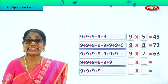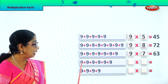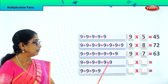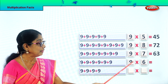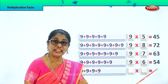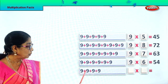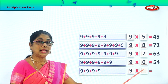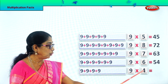Nine sevens are sixty-three. Nine — how many times? 1, 2, 3, 4, 5, 6. Nine sixes are. Nine sevens are here. Nine sixes are fifty-four. Now you have nine: 1, 2, 3, 4 times. Nine fours are. Nine into four. Nine fours are thirty-six.